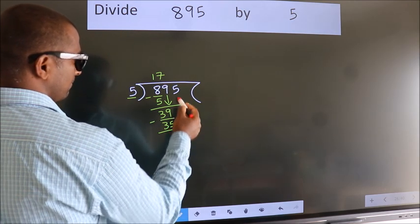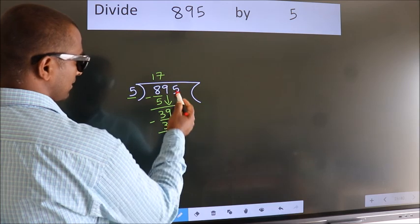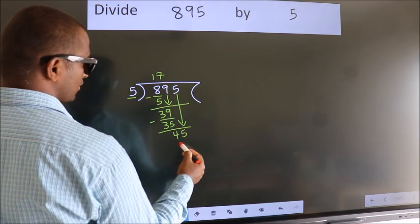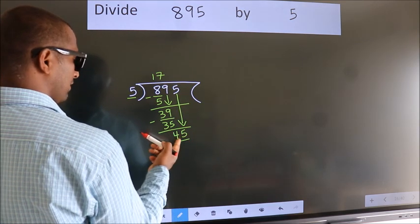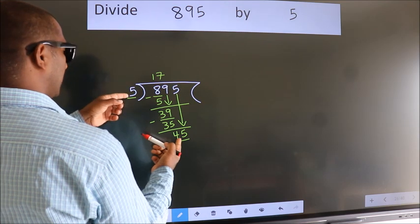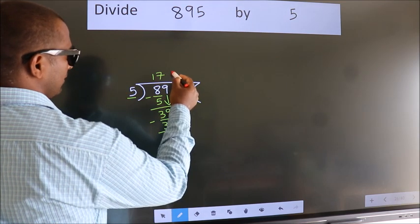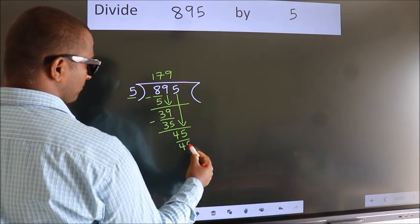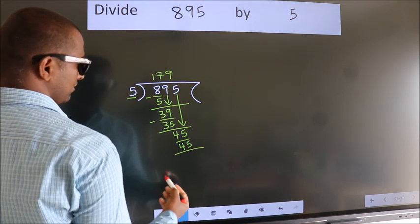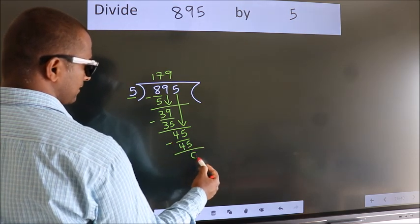After this, bring down the beside number. So, 5 down. So, 45. When do we get 45? In 5 table. 5 9s 45. Now, we subtract. We get 0.